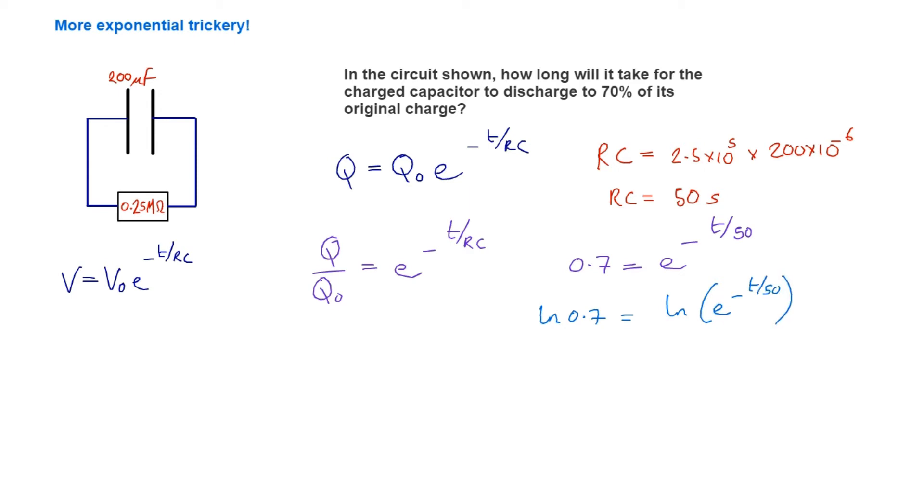Hopefully you're feeling okay about natural logs. The natural log of something is what you have to raise e to to get that thing. So we can see here that the natural log of e^(-t/50) is just going to be -t/50.